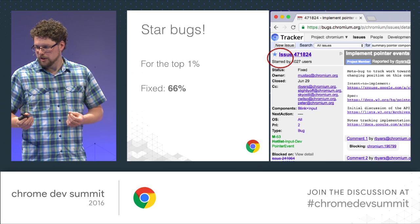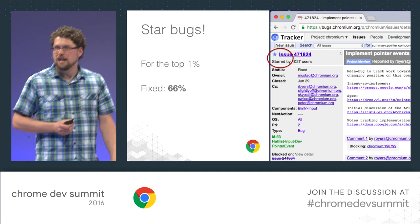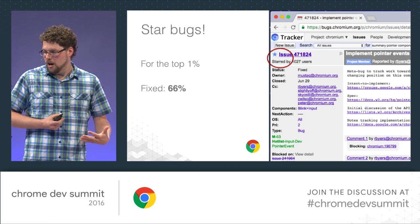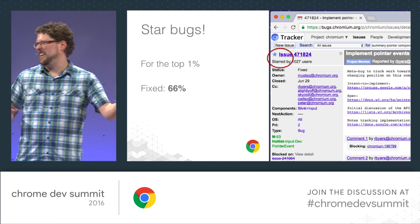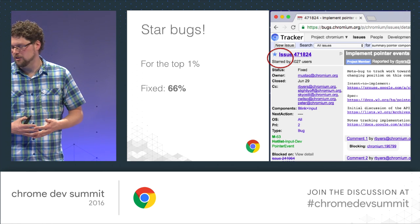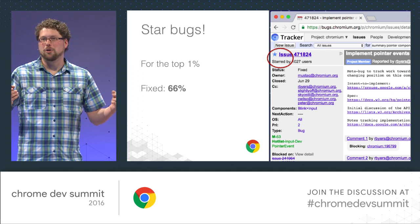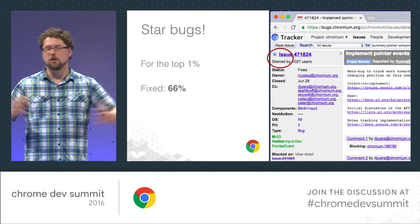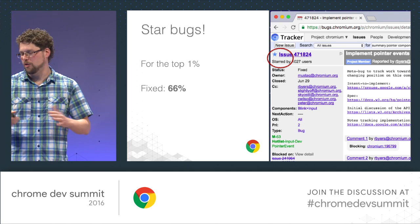I think this is a signal that if you file a bug on us, there's a good chance the right people will see it, pay attention, and something will happen. The other signal that's really valuable to us is stars — in our bug tracker, if you're signed in and click the star next to an issue, it means you care and want email updates. We use the number of stars as a really important signal in prioritization. If you look at the top 1% in terms of stars, we've fixed two-thirds of them — which I think is fantastic.